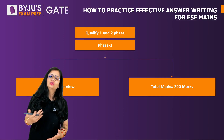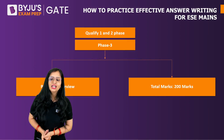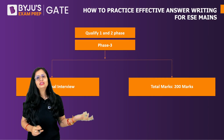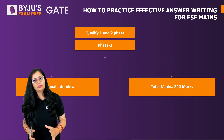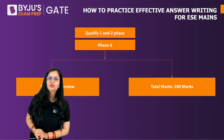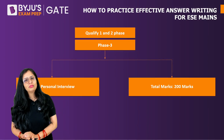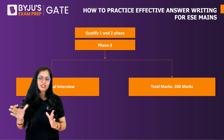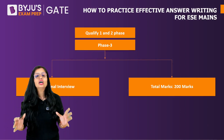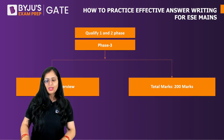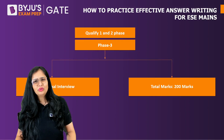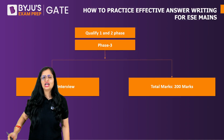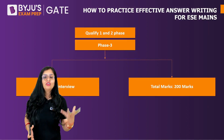After clearing Phase One (objective) and Phase Two (mains), you proceed to Phase Three — the personal interview. The total marks for the personal interview is 200 marks. But to reach that stage, you first need to clear the mains paper. So the question is: what is the effective way to practice writing mains answers, and what are the things you need to keep in mind?